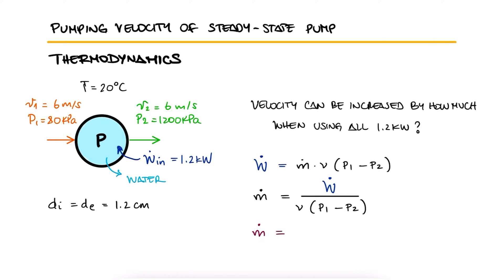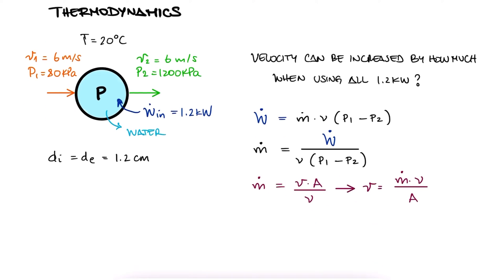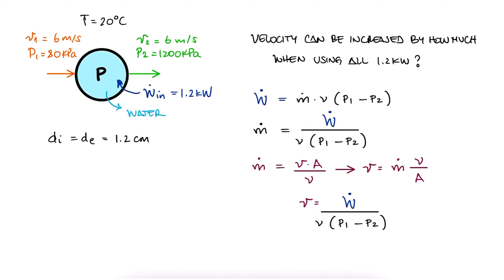Since the mass flow rate is equal to the velocity times the area over specific volume, the velocity would be equal to the mass flow rate times the specific volume over the area. We substitute the mass flow rate expression here, and find that the velocity is equal to the power over the change in pressure times the area.